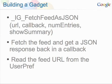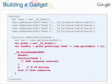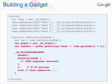Next, within your gadget, you should perform the fetch. We have an API method called IGFetchFeedAsJSON. This is used to perform a fetch to the feed and return a JSON response back to a callback function that you define. Within the callback, use a JSON object to read the feed. The second parameter is where you specify the callback function. The third parameter defines the number of entries you want to fetch. The fourth parameter is a simple true or false, depending on whether you want to include summaries for each entry.